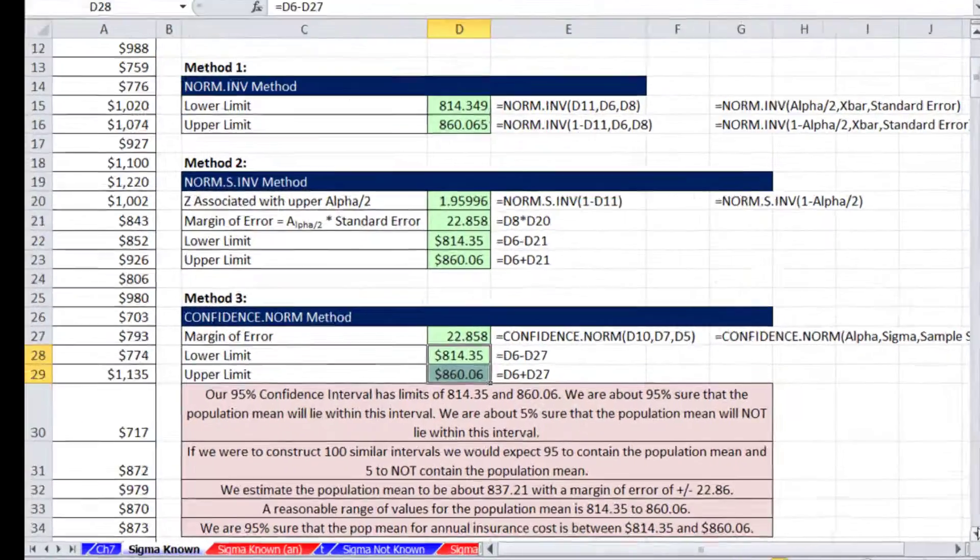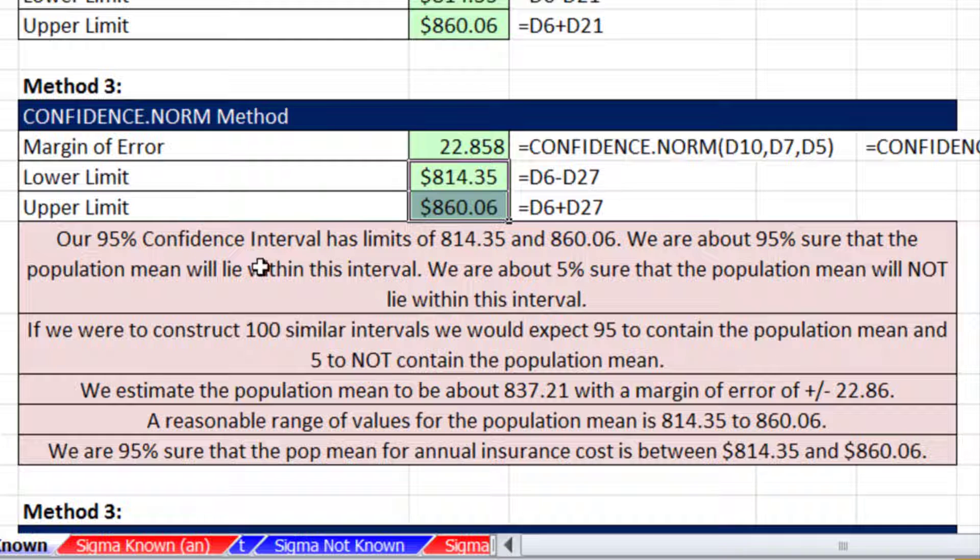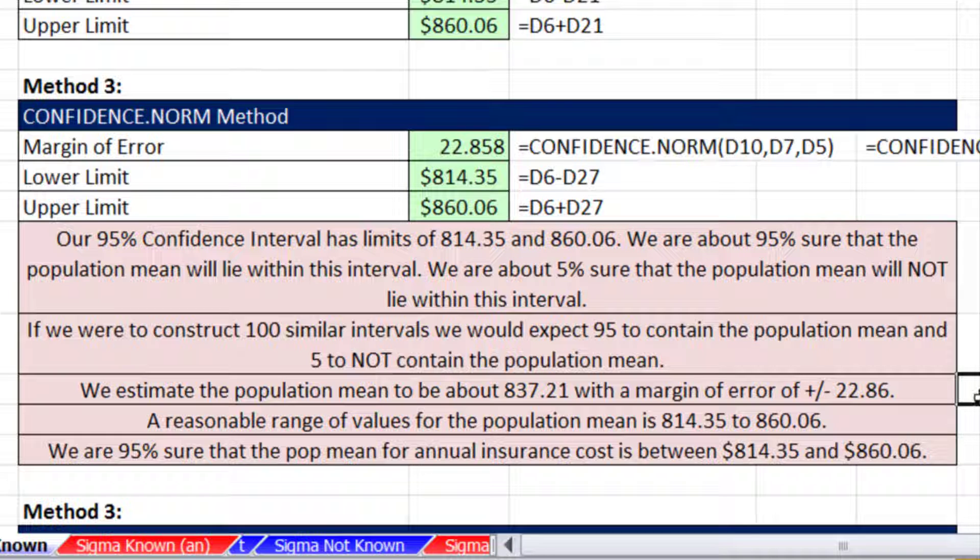What can we say? Our 95% confidence interval has limits of 814 and 860. We are about 95% sure that the population mean lies within our interval. As we talked about last video, technically, if we were to construct 100 similar intervals, we would expect 95 of them to contain the population mean and 5 to not contain the population mean.